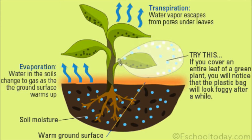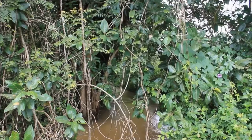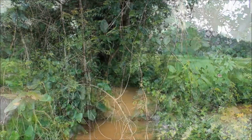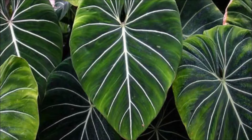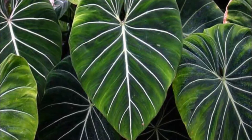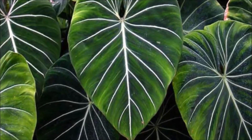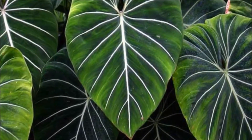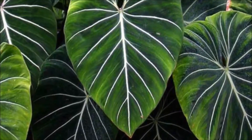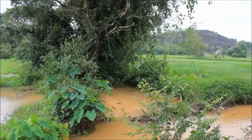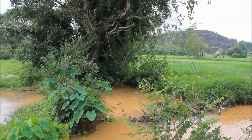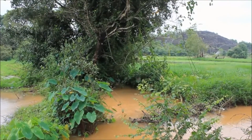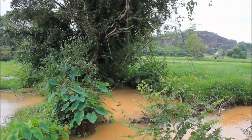Another adaptation that the vegetation has undergone is the development of waxy surfaces and drip tips on the leaves of many plant species found in monsoonal forests. This promotes drainage when precipitation levels are high and prevents the growth of bacteria.